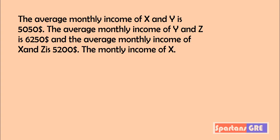The average monthly income of X and Y is $5050. The average monthly income of Y and Z is $6250, and the average monthly income of X and Z is $5200. The question is: find the monthly income of X.